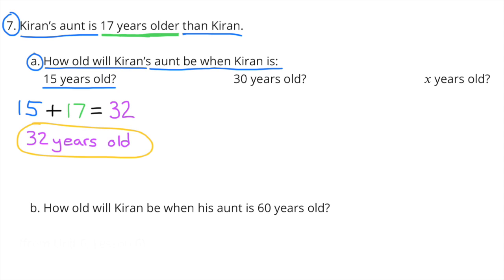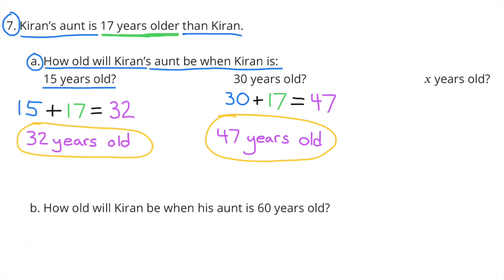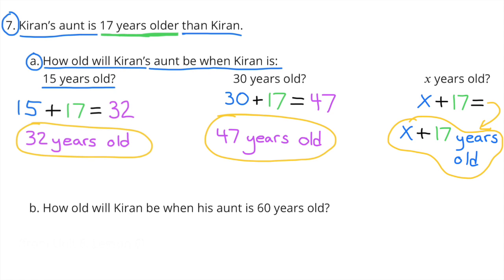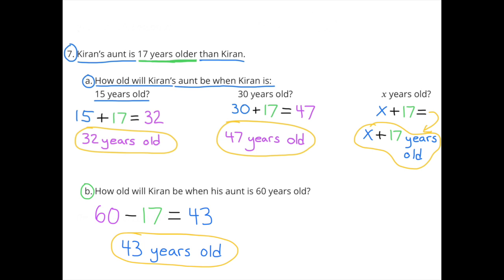Number 7. Kieran's aunt is 17 years older than Kieran. Part A: how old will Kieran's aunt be when Kieran is 15? 15 plus 17 equals 32, so Kieran's aunt would be 32 years old. When Kieran is 30, his aunt would be 30 plus 17, or 47 years old. When Kieran is X years old, his aunt would be X plus 17 years old. Part B: how old would Kieran be when his aunt is 60? Kieran would be 43 years old, because 60 minus 17 is 43.